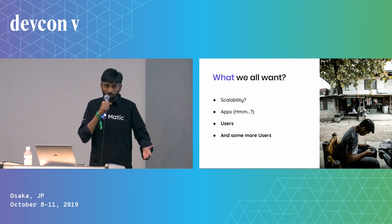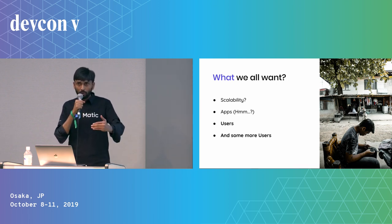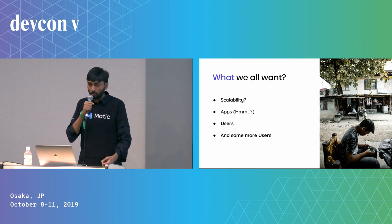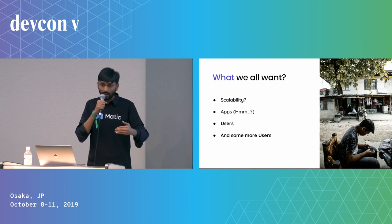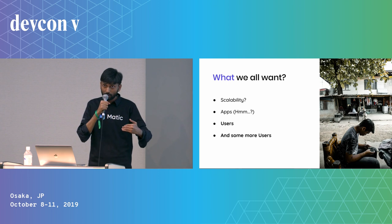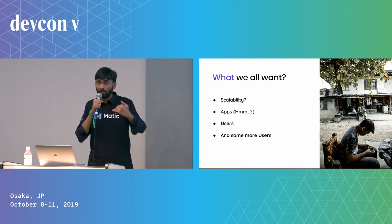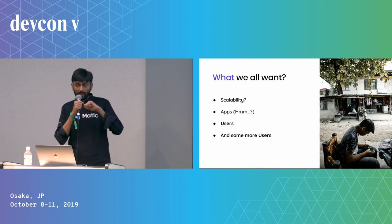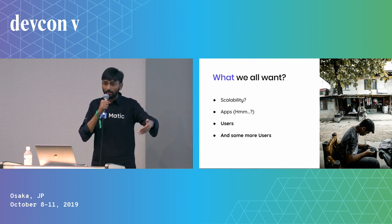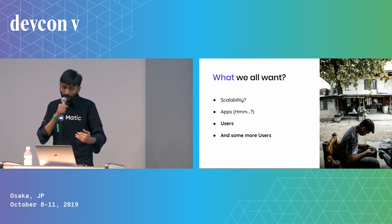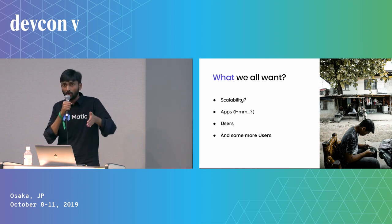Someone said when you think about a problem, you think backward and work forward. So when we think about the problems, we think about users and how to get more users and work backward. We start with scalability and how it affects most dApps, and how we get more developers to build on blockchains so they can get more users.